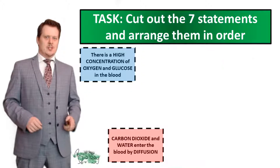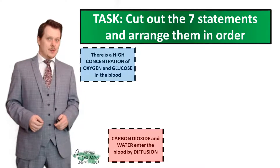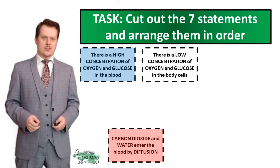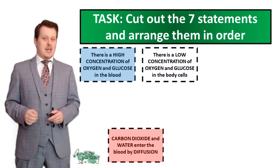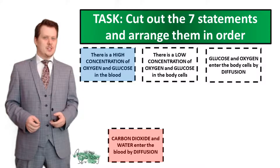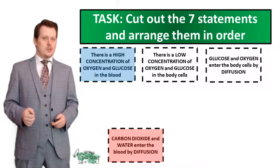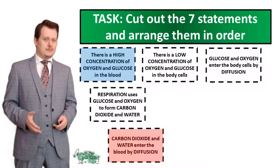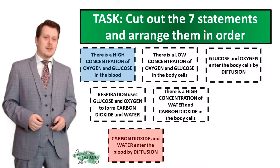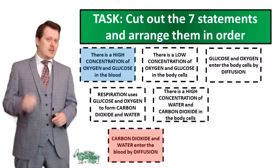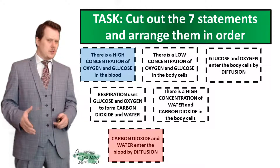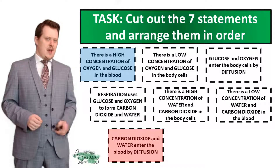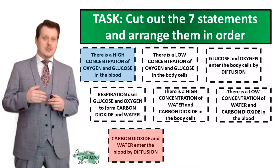Here is the order of the statements. Starting with: there is a high concentration of oxygen and glucose in the blood. Next, establish the low concentration: there is a low concentration of oxygen and glucose in the body cells. We've established a concentration gradient, so glucose and oxygen will enter the body cells by diffusion. In the cell, aerobic respiration occurs — glucose and oxygen react to form carbon dioxide and water. As a result, the concentration of carbon dioxide and water is high in the body cells. There is a low concentration of carbon dioxide and water in the blood. And the seventh statement: carbon dioxide and water enter the blood by diffusion.